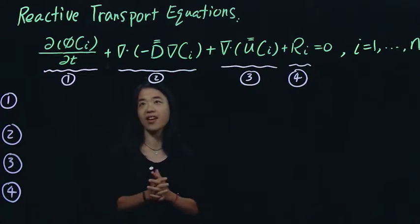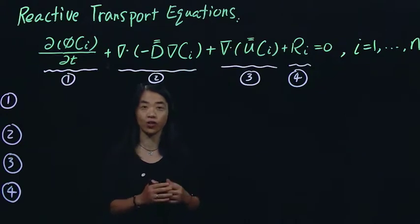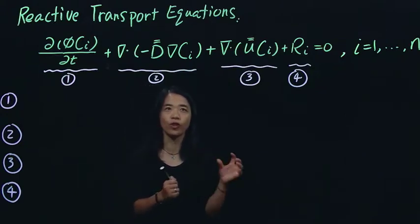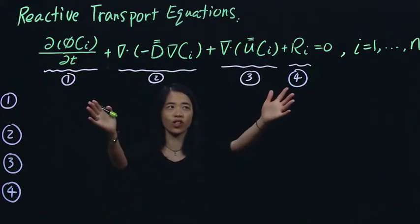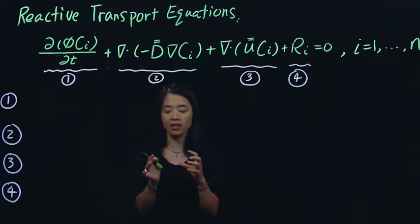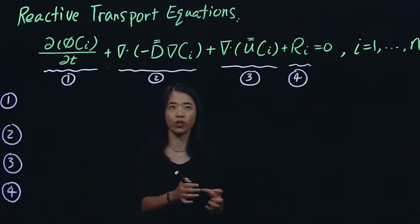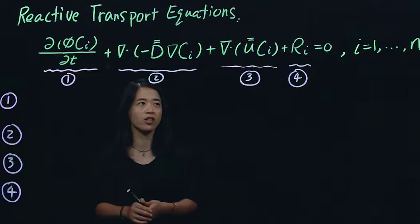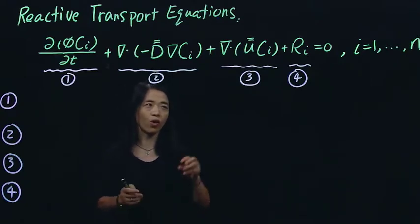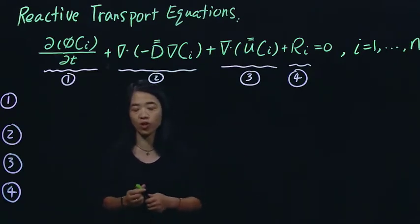What I'm going to do today is really introduce the general idea of reactive transport equations and the overview of it. This equation that I put here is what we call the mass conservation equation for chemical species in aqueous phase for one of the representative species.